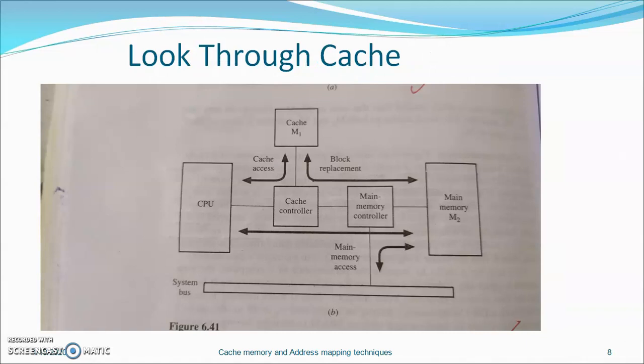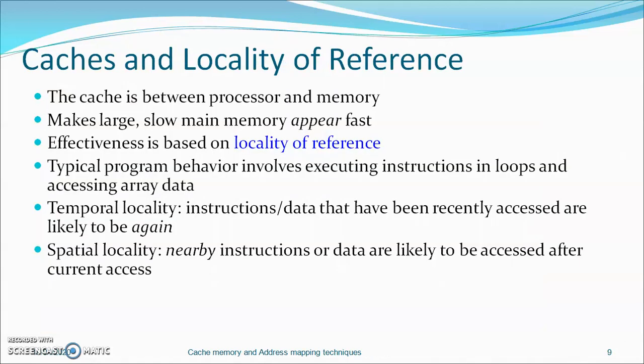The second design is the look-through cache. In the look-through cache, the CPU communicates with the cache via a separate bus that is isolated from the main system bus. The system bus is available for use by other units such as I/O controllers to communicate with the main memory. Hence, cache accesses and main memory accesses not involving the CPU can proceed concurrently.